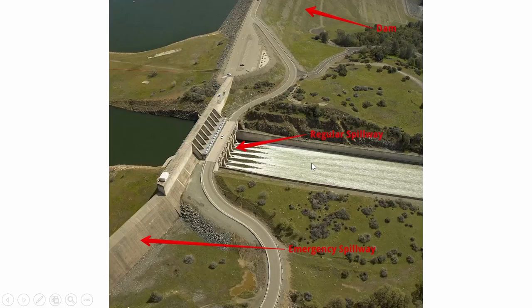The reason they started evacuating people is that this emergency spillway is between 20 and 30 feet tall. If that concrete section were to scour away — right at the toe of all that concrete is just normal land surface — the water was coming over the emergency spillway and undercutting its foundation. On Sunday afternoon they sent out a tweet saying they expected the emergency spillway to fail within the next hour. A 20 to 30 foot wall of water would be pretty bad news for people downstream of this reservoir.